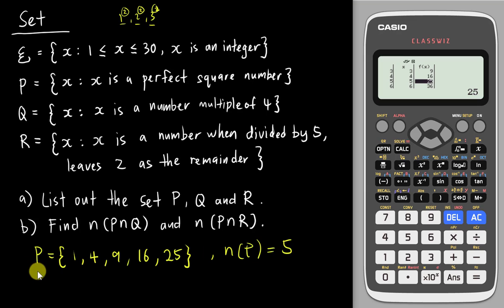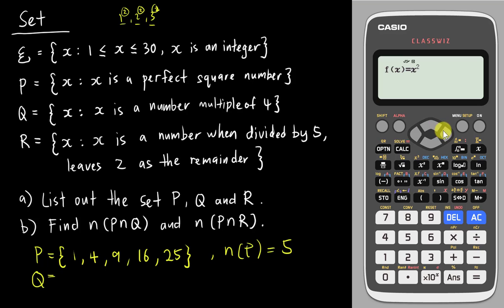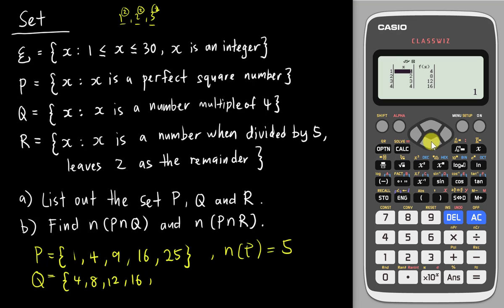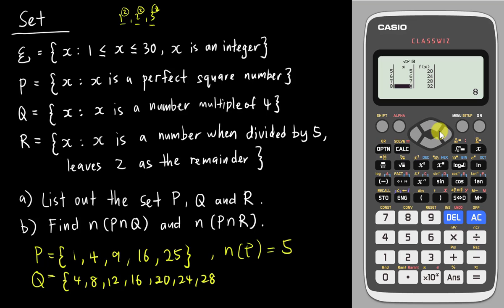Now for set Q — the multiples of 4. I press AC and change the function to 4x, because when x equals 1 I get 4, when x equals 2 I get 8, and so on. I keep the range 1 to 30 and press enter. The listed multiples of 4 are: 4, 8, 12, 16, 20, 24, 28. The next would be 32, which is more than 30, so I stop there.